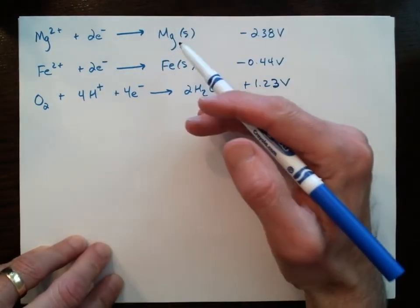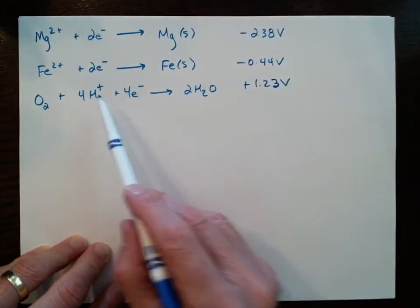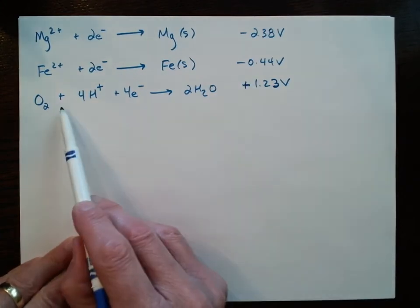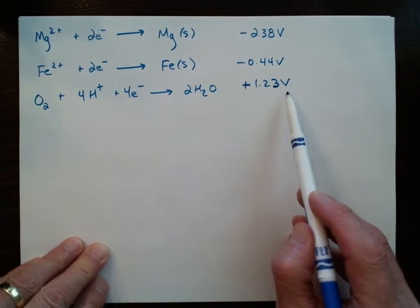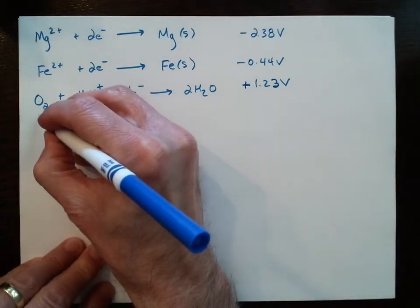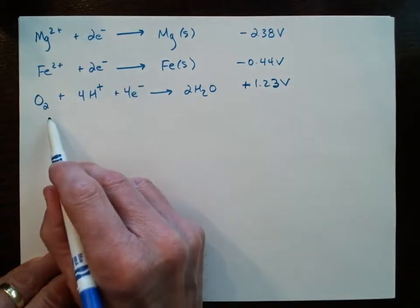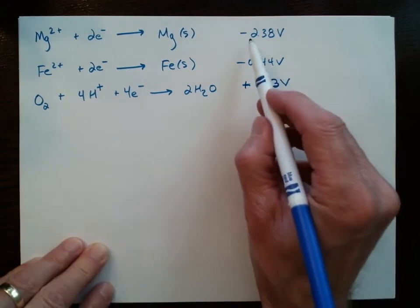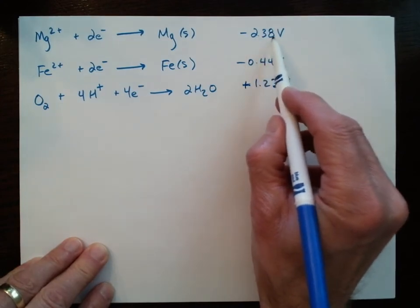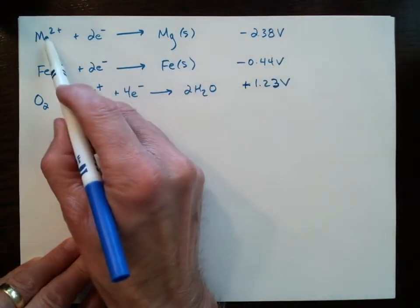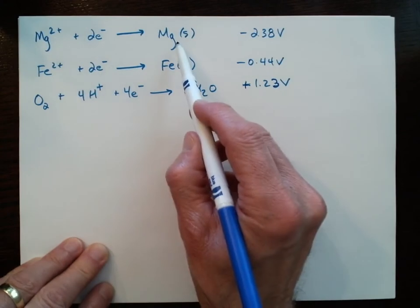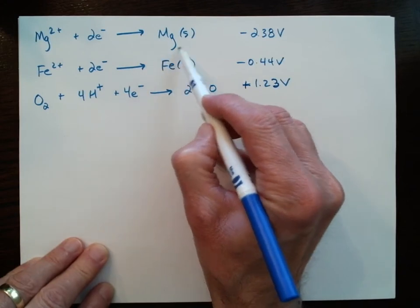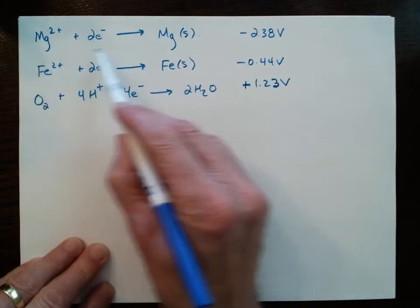When you have a list of half reactions, if something has a very positive cell potential, that means it's reduced very easily, so things on the reactant side are going to be very good oxidizing agents. On the other hand, things with very negative cell potentials are oxidized easily, so they're going to be very good reducing agents. But you should recognize that those reducing agents are going to be on the product side of the reduction half reaction.